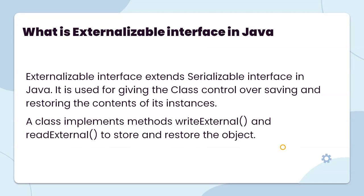What is the Externalizable interface in Java? The Externalizable interface extends the Serializable interface. It is used to give the class control over saving and restoring the contents of its instances. A class implements the writeExternal and readExternal methods to store and restore the object.